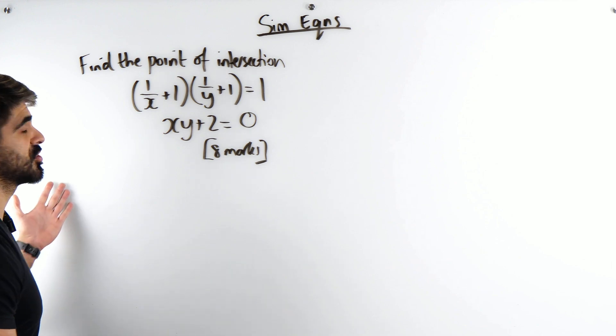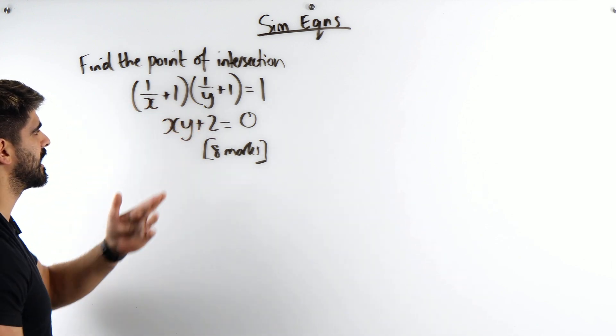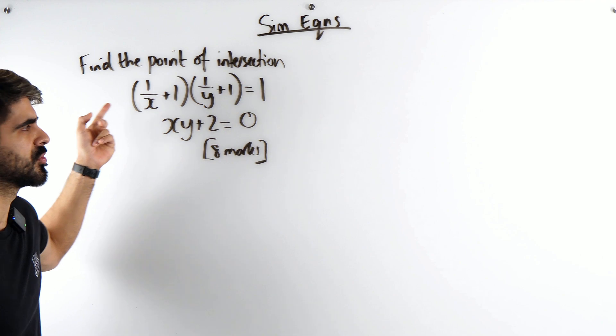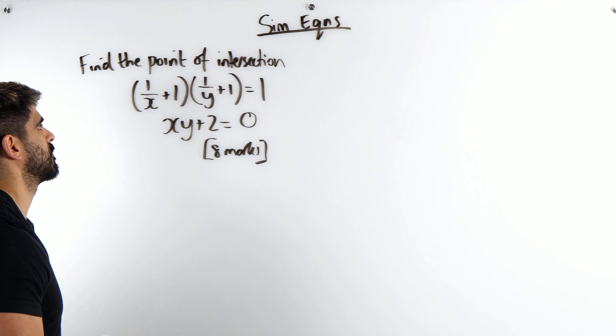Okay, it's not really a conventional question, right? Usually you have like a quadratic and a linear. This, well maybe this is linear, we'll see later on, but this is definitely not linear. This is a reciprocal graph.